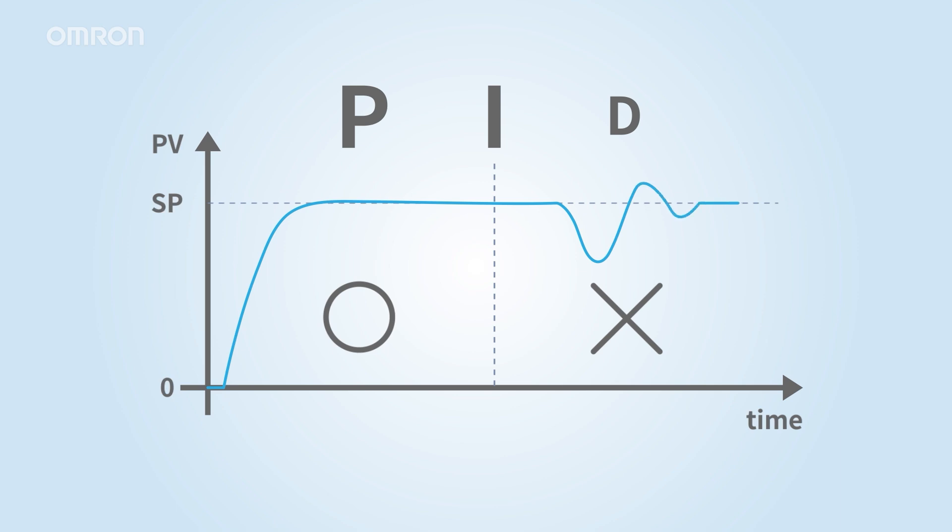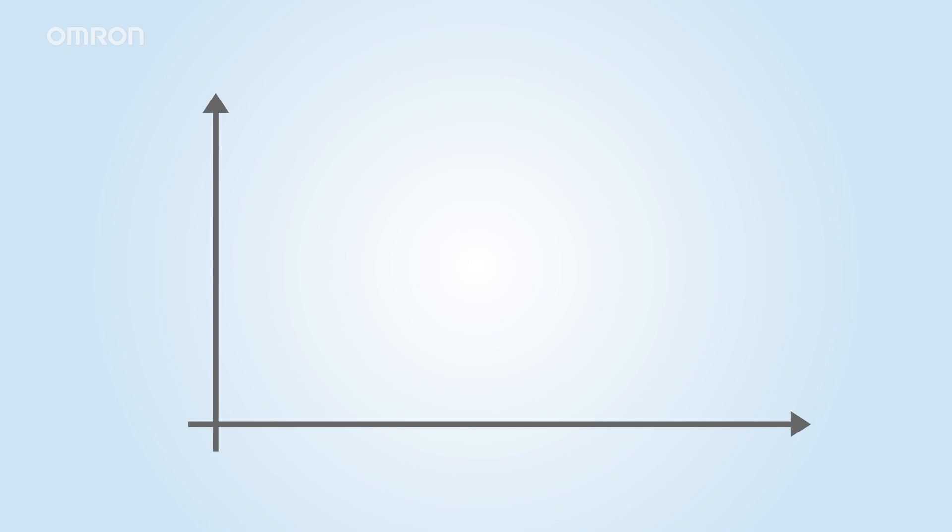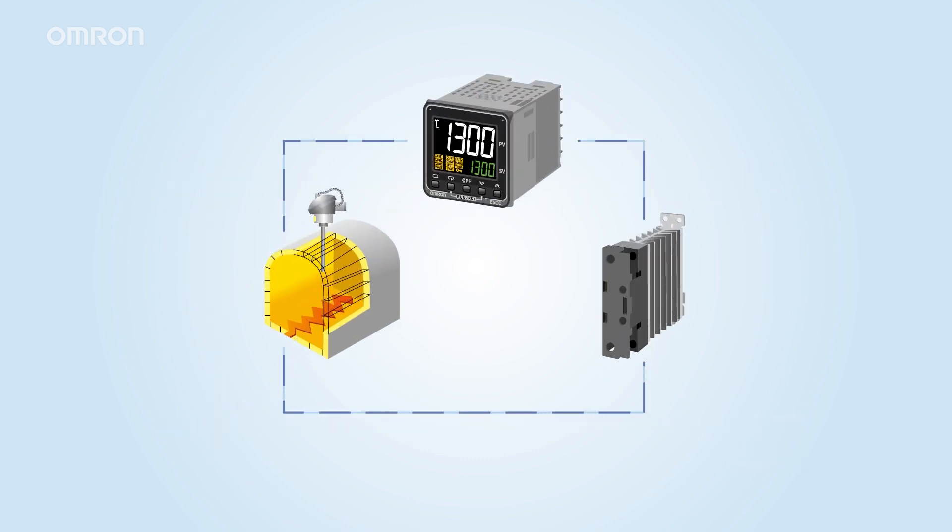By using a 2 degree of freedom PID control method, it is possible to balance both the response to the set temperature and the response to disturbances. Omron's 2 degree of freedom PID control improves the response to disturbances with its PID control. However, this can cause overshooting when heating to the set temperature. To suppress the heater's output during heating, a filter is applied to the set temperature during the heating process. This allows for temperature control that balances both target response and disturbance response. Please check Omron's temperature controllers equipped with 2 degree of freedom PID control from this link.